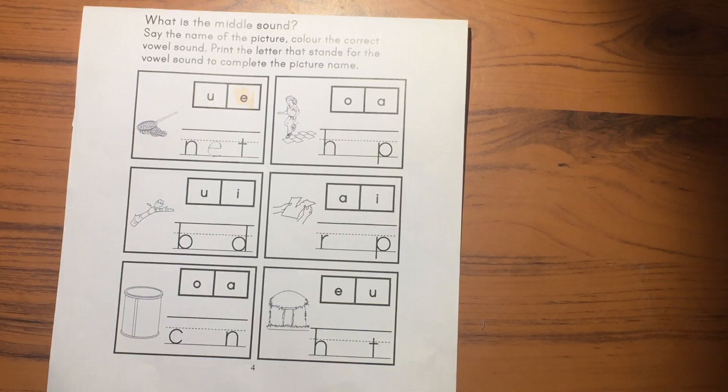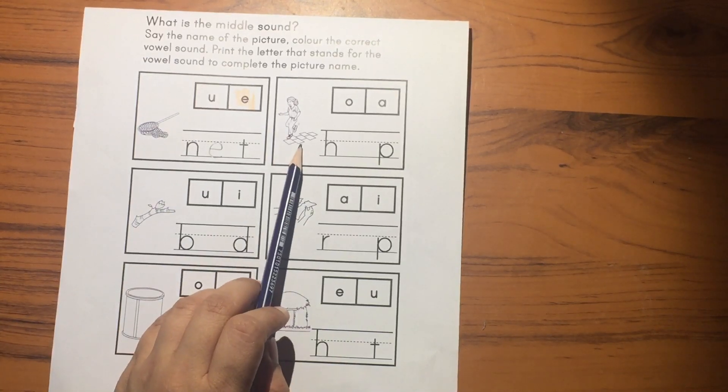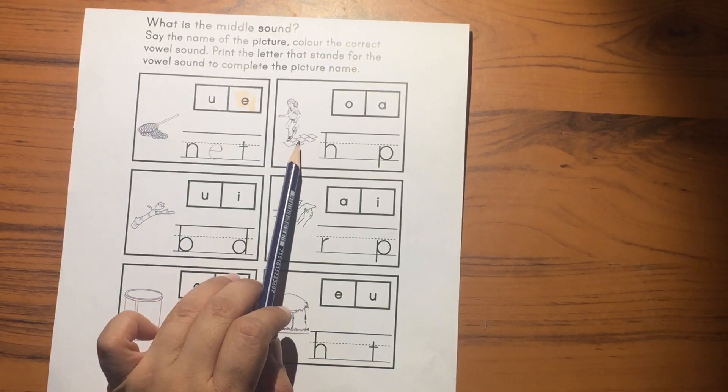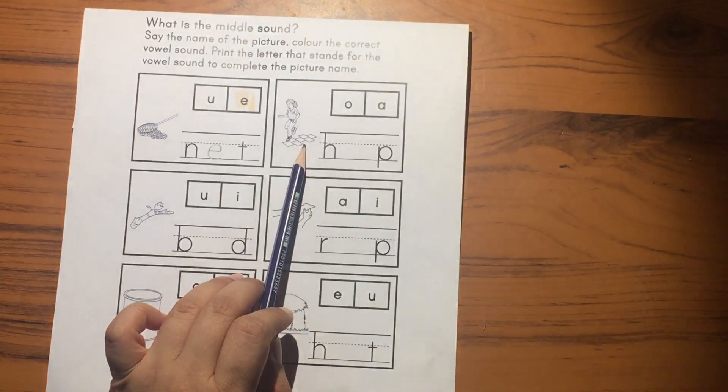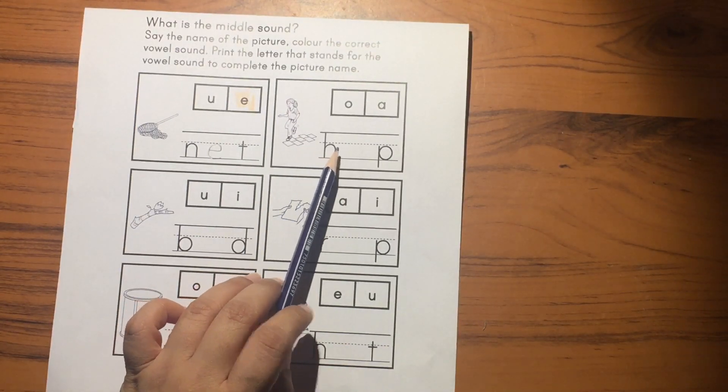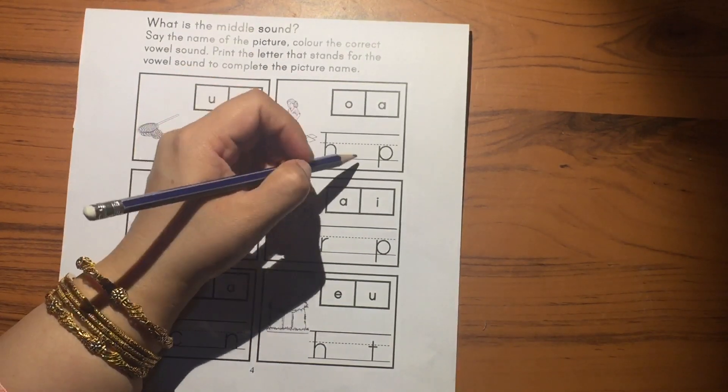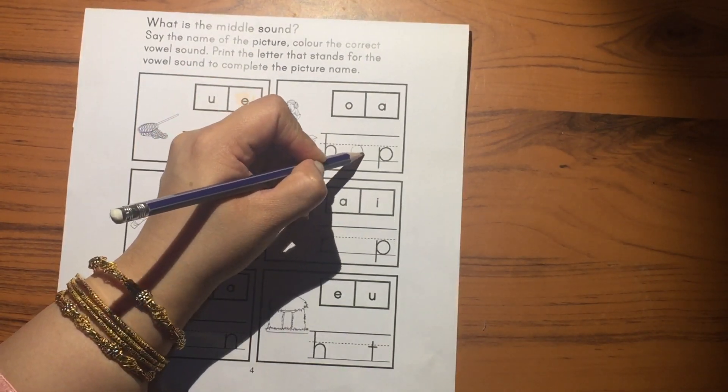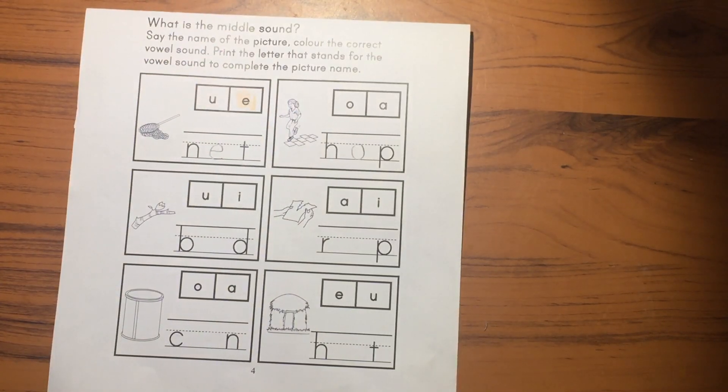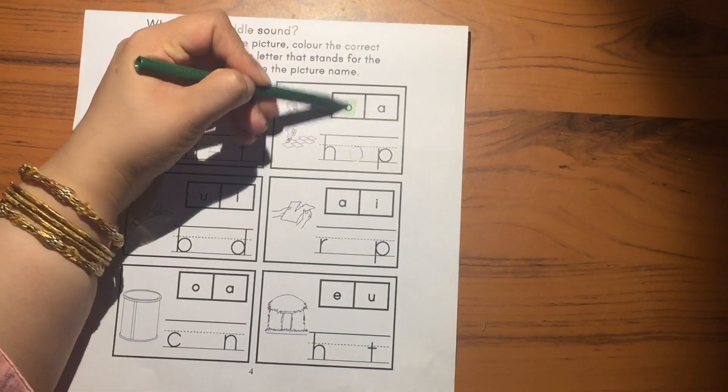The next picture is hop. What vowel is coming inside? What is the middle sound for hop? Hop. So this is the vowel which we will write here to make the word hop, and you will color the vowel.